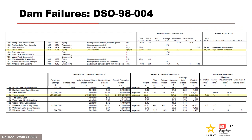This slide presents an example from Tony Wall's dam failure database to provide a sense of the type of data cataloged, which includes embankment characteristics and dimensions, hydraulic characteristics, and breach characteristics such as dimensions, outflow, and time parameters. Teton Dam is highlighted.